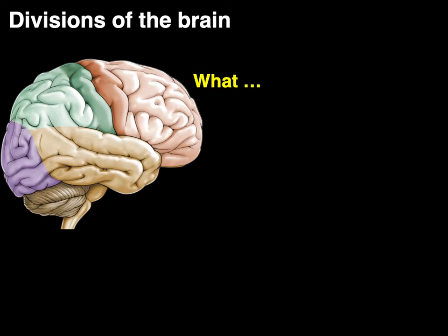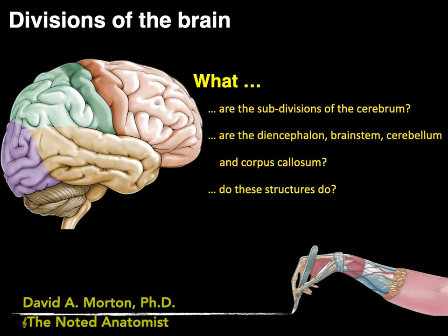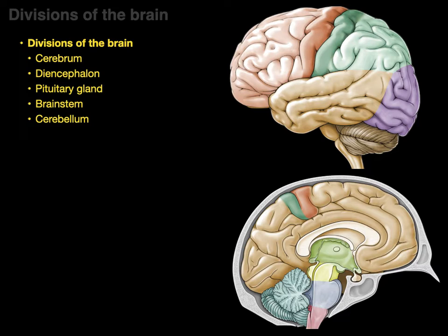We're going to talk about divisions of the brain and answer the questions: what are the subdivisions of the cerebrum, and what are the diencephalon, brainstem, cerebellum, and corpus callosum, and what do these structures do? My name is Dr. Morton and I'm the noted anatomist. The divisions of the brain are the cerebrum, diencephalon, pituitary, brainstem, and cerebellum. This video is meant to give an overview of where these structures are located and what they do — basically an orientation to the brain.